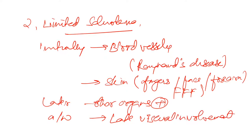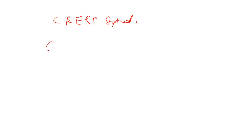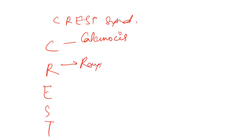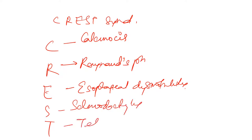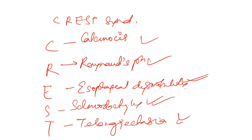Limited scleroderma includes CREST syndrome. CREST stands for: C — Calcinosis, R — Raynaud's phenomenon, E — Esophageal dysmotility, S — Sclerodactyly, and T — Telangiectasia.